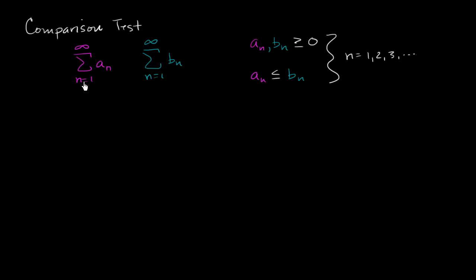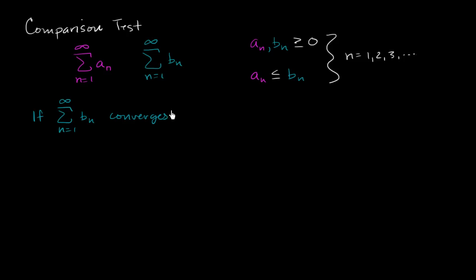I'm not doing a formal proof here, but hopefully that gives you a little bit of intuition. The comparison test tells us: if the larger series — the one whose corresponding terms are at least as large — converges, if it sums to some finite value rather than going unbounded towards infinity, then the smaller series must also converge.